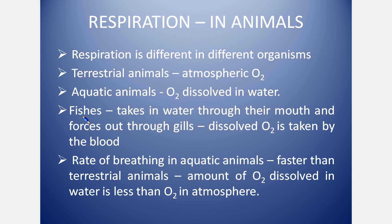For example, fishes and many aquatic animals use gills for respiration. The gills allow aquatic animals to extract dissolved oxygen from water. The breathing rate of aquatic animals is higher because the oxygen level dissolved in water is less than the oxygen level in the atmosphere. That is why aquatic animals have a higher breathing rate compared to terrestrial animals.